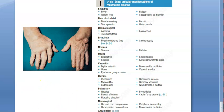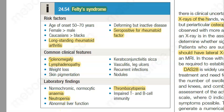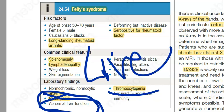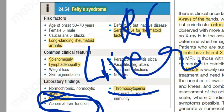Actually, the liver is also affected in rheumatoid arthritis. In Felty's syndrome, liver function is affected, which leads to thrombocytopenia. So yes, the liver is also affected in rheumatoid arthritis.